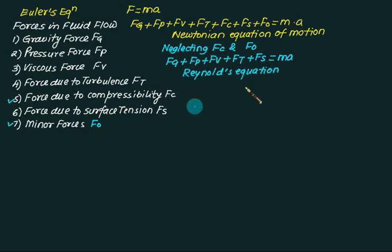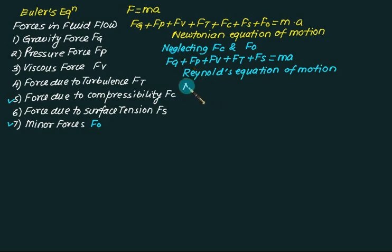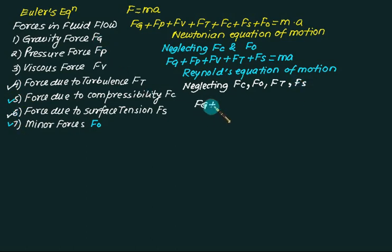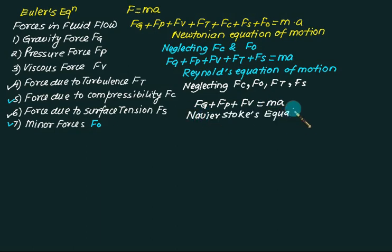Reynolds neglected the minor forces and the compressibility effect. In the Navier-Stokes equation, in addition to those, the turbulence effect Ft is also neglected. What is left is Fg plus Fp plus Fv equals ma — this is the famous Navier-Stokes equation. Its assumptions are: neglect surface tension, neglect compressibility, neglect turbulence.